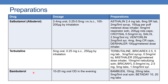The next drug is bambuterol, available as 10 to 20 mg oral once daily in the evening. The preparations are Bambodil, available in 10 mg and 20 mg tablets and 5 mg per 5 ml oral solution, and Betaday, available as 10 to 20 mg tablets.